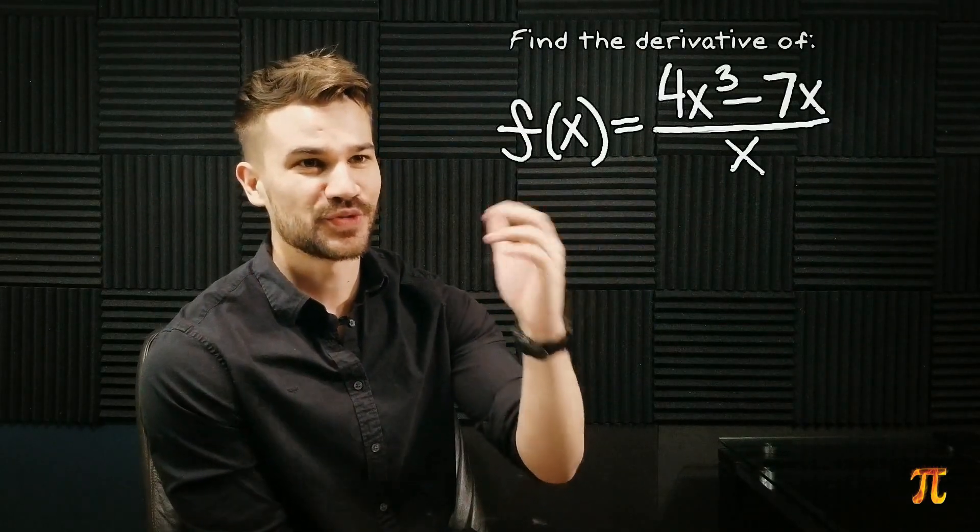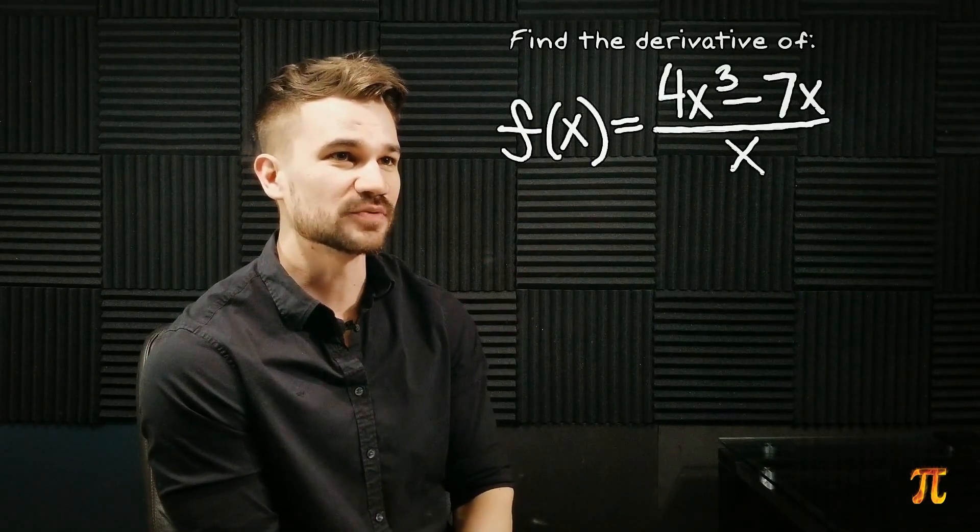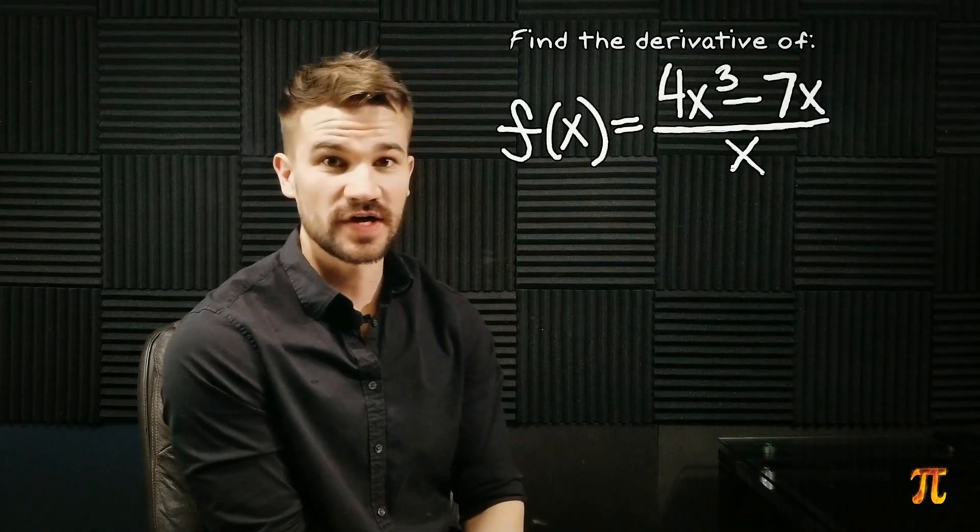Today we're gonna take a derivative. We're taking the derivative of this function f of x equals 4x cubed minus 7x over x.